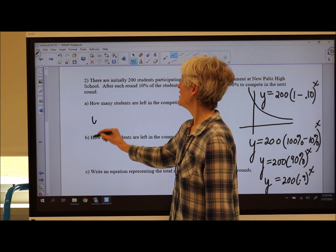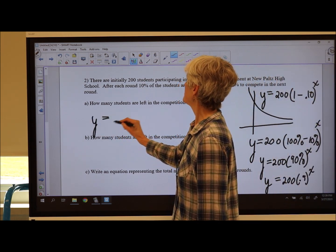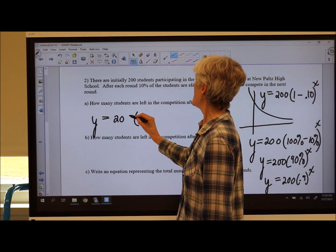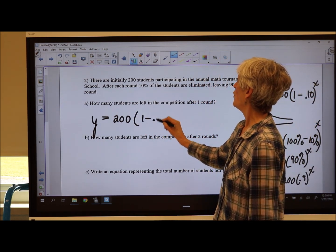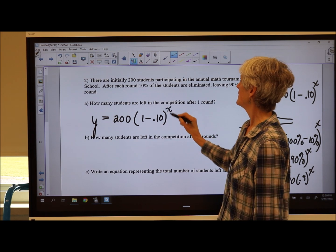So if I'm using this equation, Y equals my starting value times 1 minus 0.10 to the x.